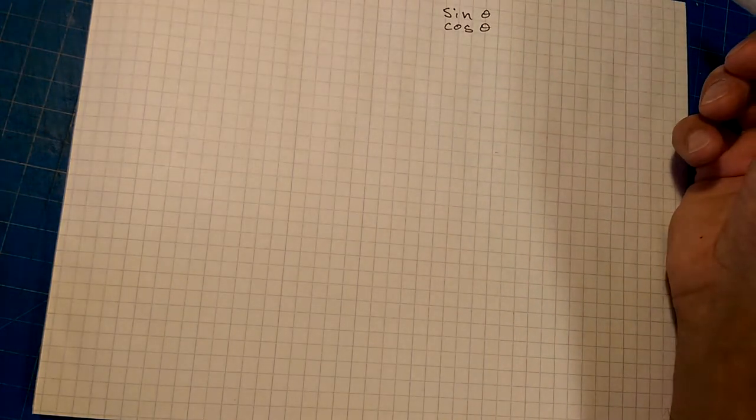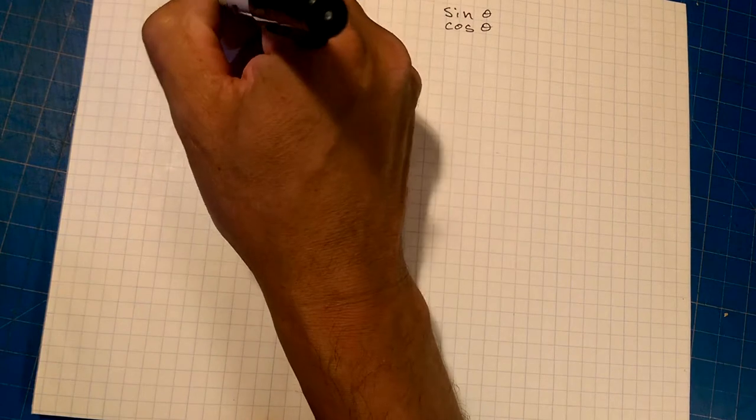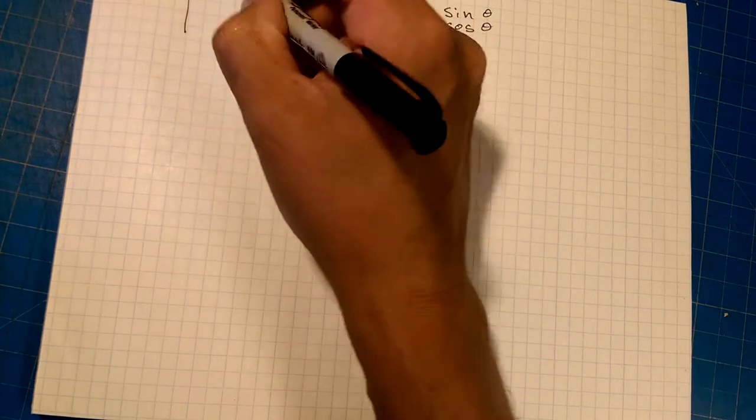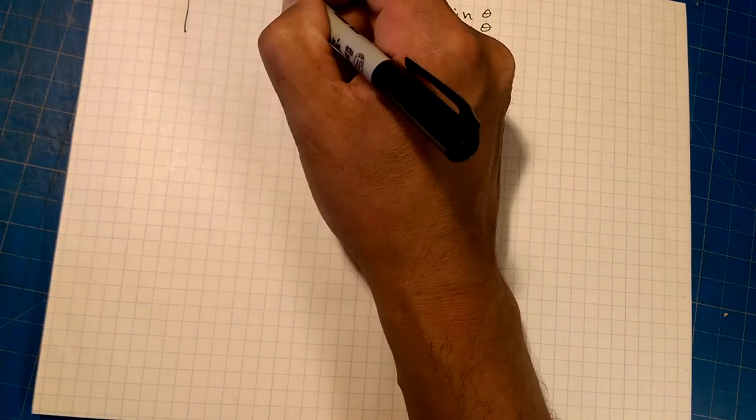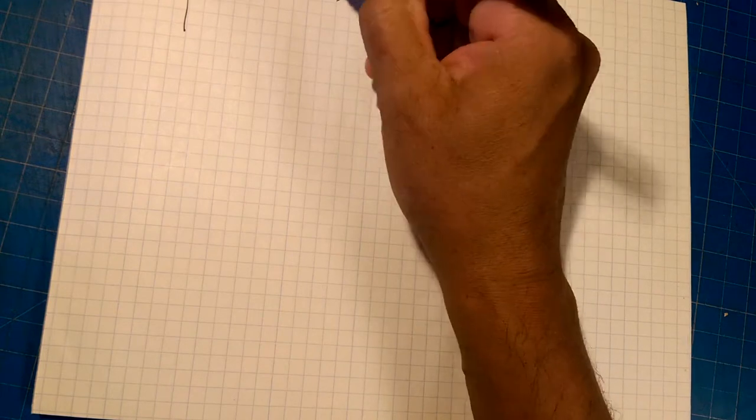And I can never remember all of the common angles. Now, the common angles would be things like 30 degrees, 45 degrees, 60 degrees, and 90 degrees. For some reason, I just can't keep in my head what the sine...